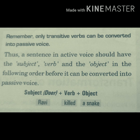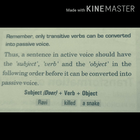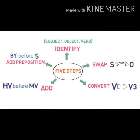The sentence in active voice should have a subject, verb, and object in the following order before it can be converted into passive voice. For example, 'Ravi killed a snake.' Ravi is the subject (doer), 'killed' is the verb, and 'a snake' is the object — all three are present. So we can convert it: 'A snake was killed by Ravi.'